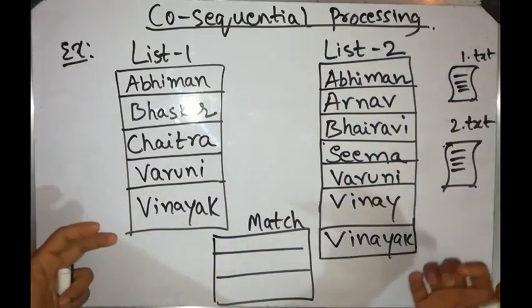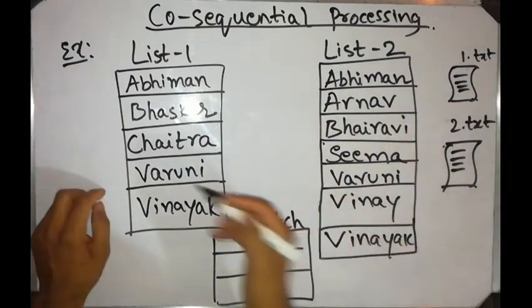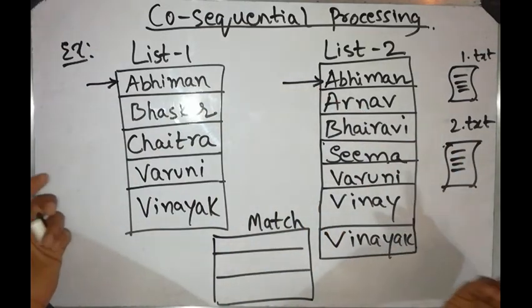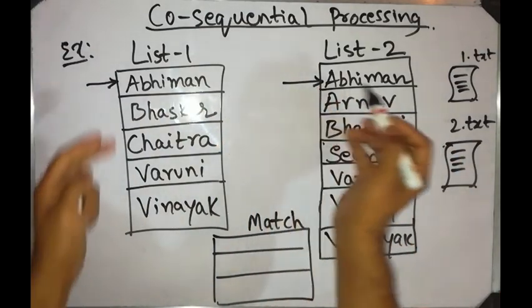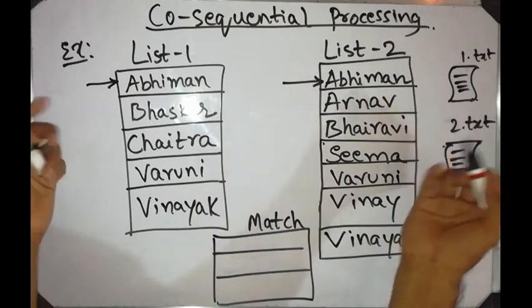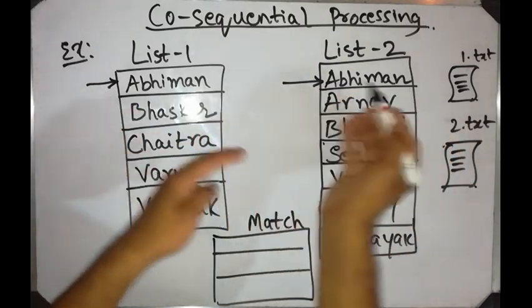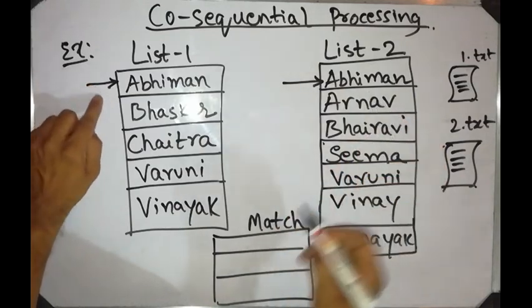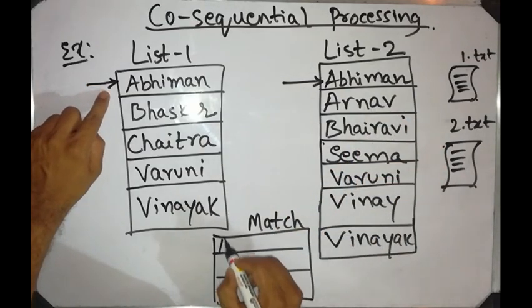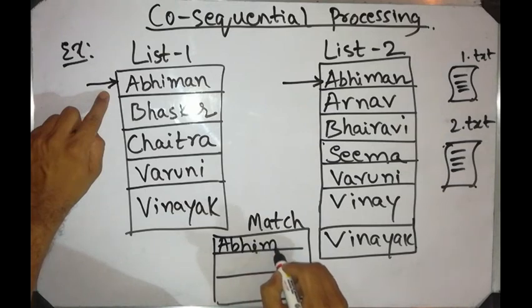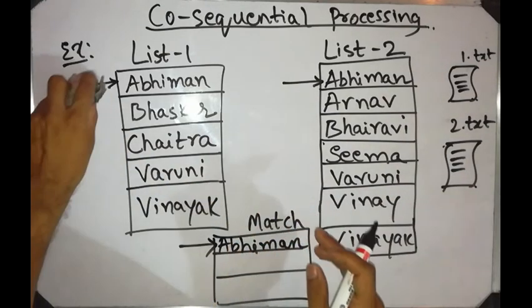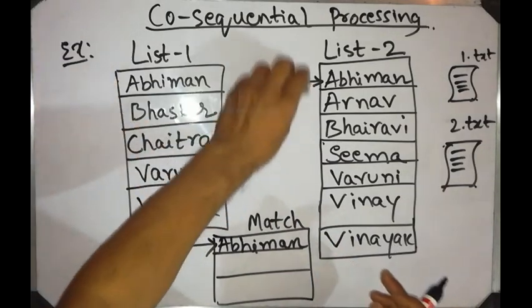When we have these two lists as arrays, we start from the first name of each. We compare the first names — in this case there is a match: Abhiman and Abhiman. When there is a match, we write that name in the match list and then advance the pointers one step ahead in both lists.